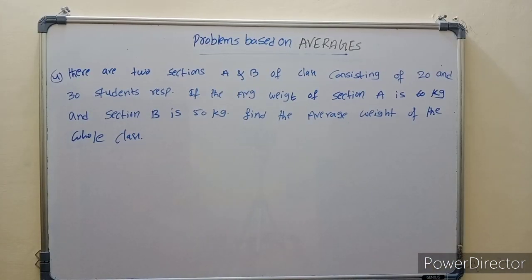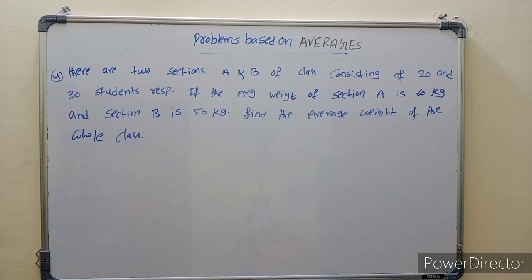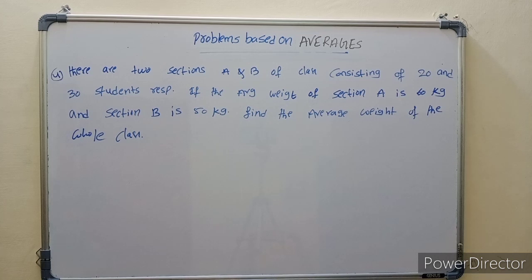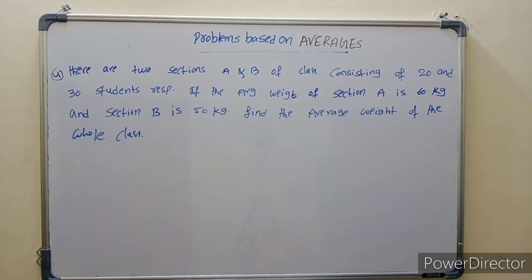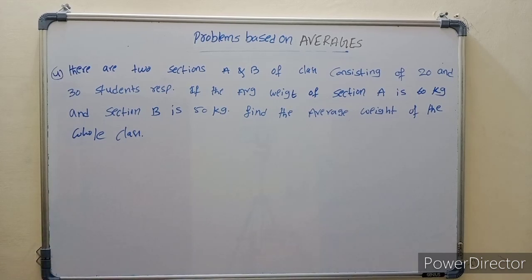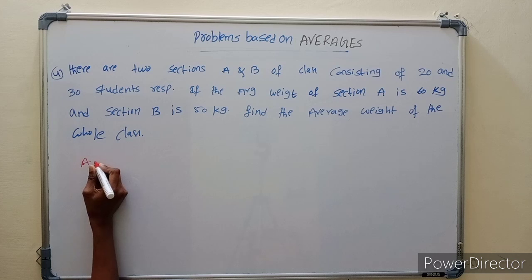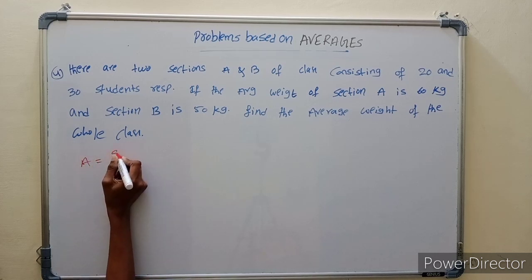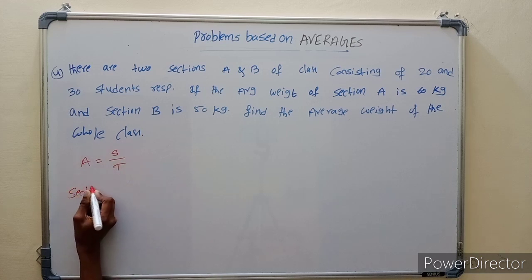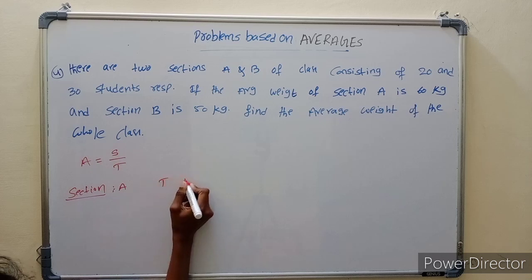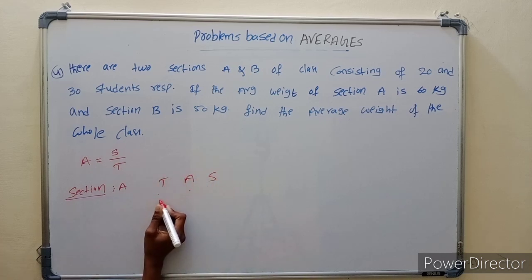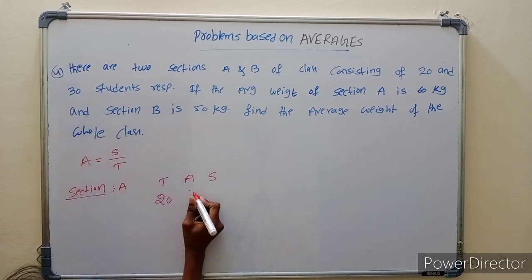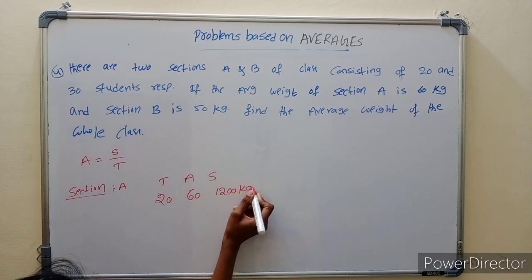Next problem: there are two sections A and B of a class consisting of 20 and 30 students respectively. The average weight of section A is 60 kg and section B average weight is 50 kg. Find the average weight of the whole class. Section A sum equals average into total: 20 into 60 equals 1200 kg.